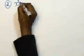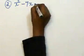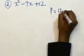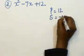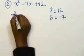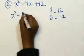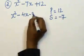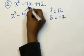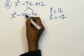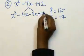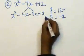Let's take another example: x² - 7x + 12. I want the same product 12, but this time the sum required is -7. It can be split as -4x and -3x, because the sum of -4 and -3 is -7, and the product of -4 and -3 is +12. Now again there are four terms.